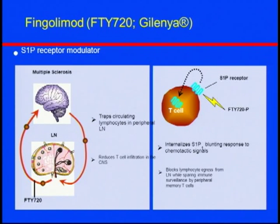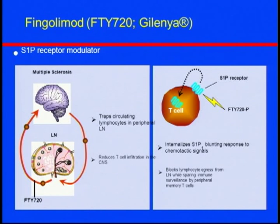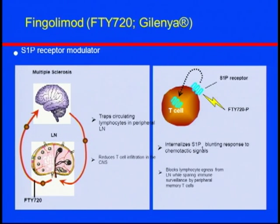By internalizing the receptor, T cells are unable to exit the lymph nodes — where T cells normally get activated. The T cells effectively get trapped in the lymph nodes, so fewer inflammatory T cells traffic to the brain. That's how we think the drug works for relapsing MS patients.